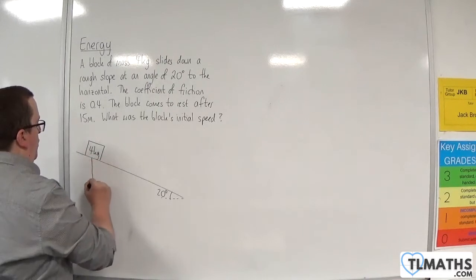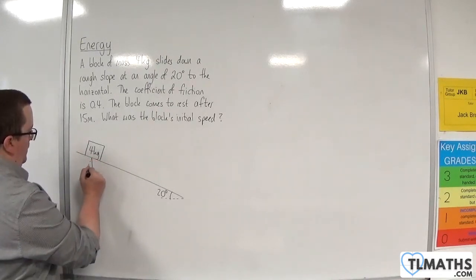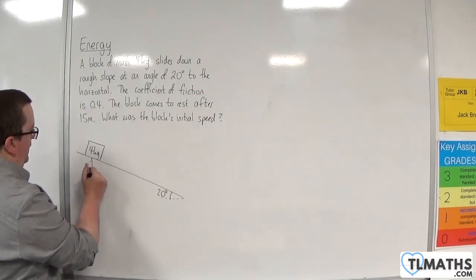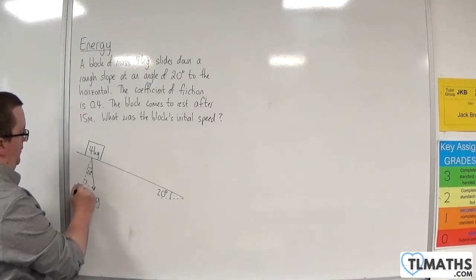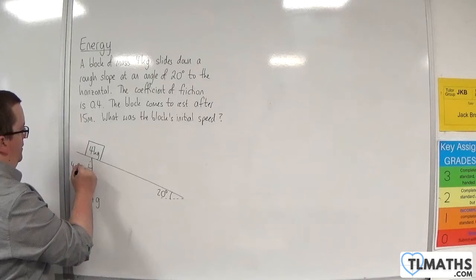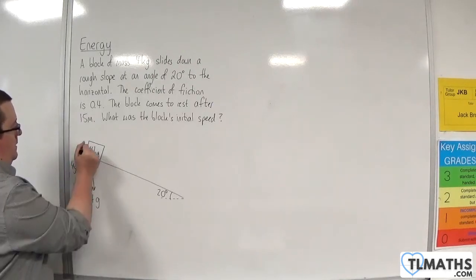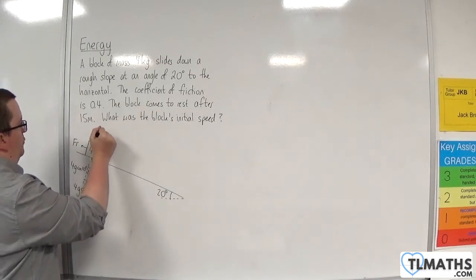So it has a weight of 4g. Let's break the weight up into its components. So that's going to be 20 degrees. This is going to be 4g sin 20 and 4g cos 20. There's going to be a frictional force and a normal reaction force.